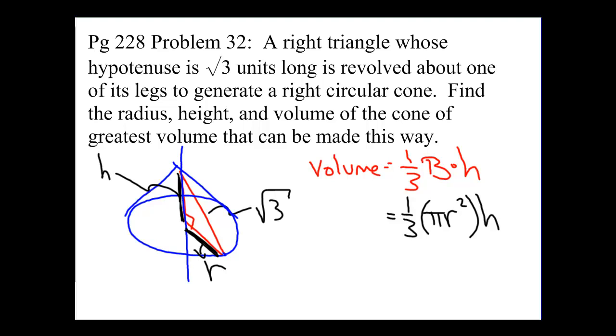You can see here that we have a connection between these variables, R squared and H. Those are two variables that are adjustable. We want to choose the values of R and H that make a cone that has a volume as large as possible. But we can't just choose any values of R and H. We can't choose R to be 100 and H to be 100, because we have a constraint here, and the constraint is that the hypotenuse has to be the square root of 3.